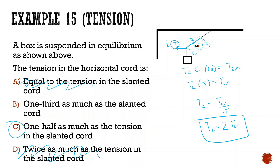I hope that made sense — it might have been a little tricky, so watch it again if needed. If you have a hard time with variable problems, try putting in numbers. For example, if you make T1 equal to 3, figure out what T2 is knowing that. That's a useful trick for variable problems. Thanks for watching — next time we'll talk about systems, which is a bit harder.